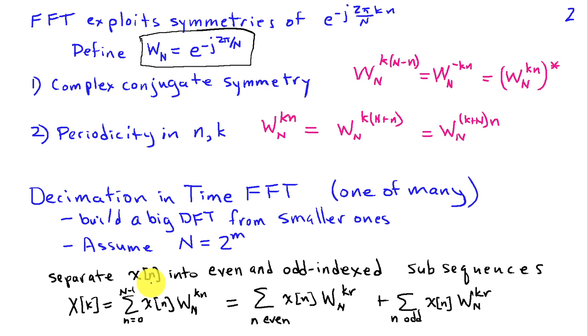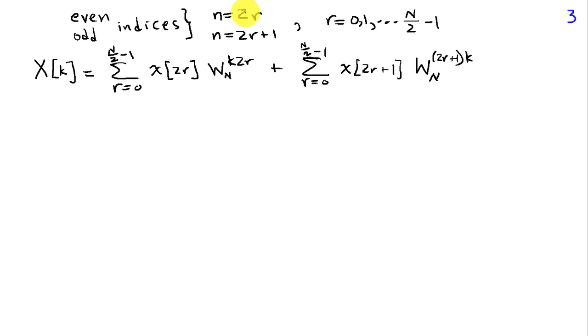And so the idea is to separate your data into even and odd indexed subsequences. So here I've written out the DFT where I've replaced the e^(-j2π/N * kn) with my W notation. So this is my DFT, and I'm going to break that up into a sum of terms involving even indices for n and a sum of terms involving odd indices for n. Now, I can write an even index as n=2r, where r goes 0, 1, up to N/2-1. And remember, N is a power of 2, so N/2 is an integer. And I can write my odd indices as n=2r+1, where again, r ranges over this interval.